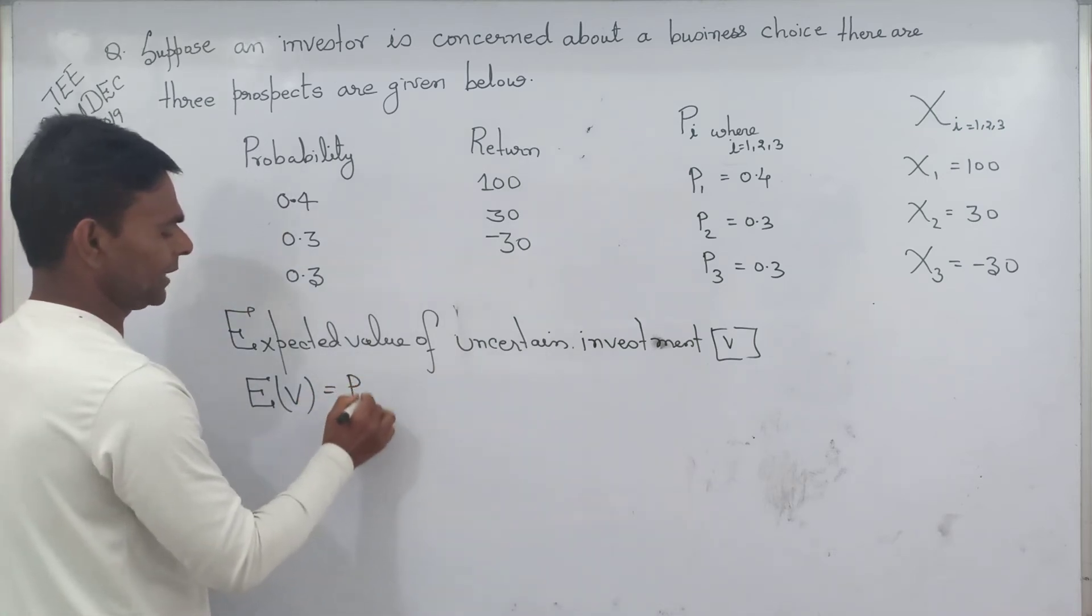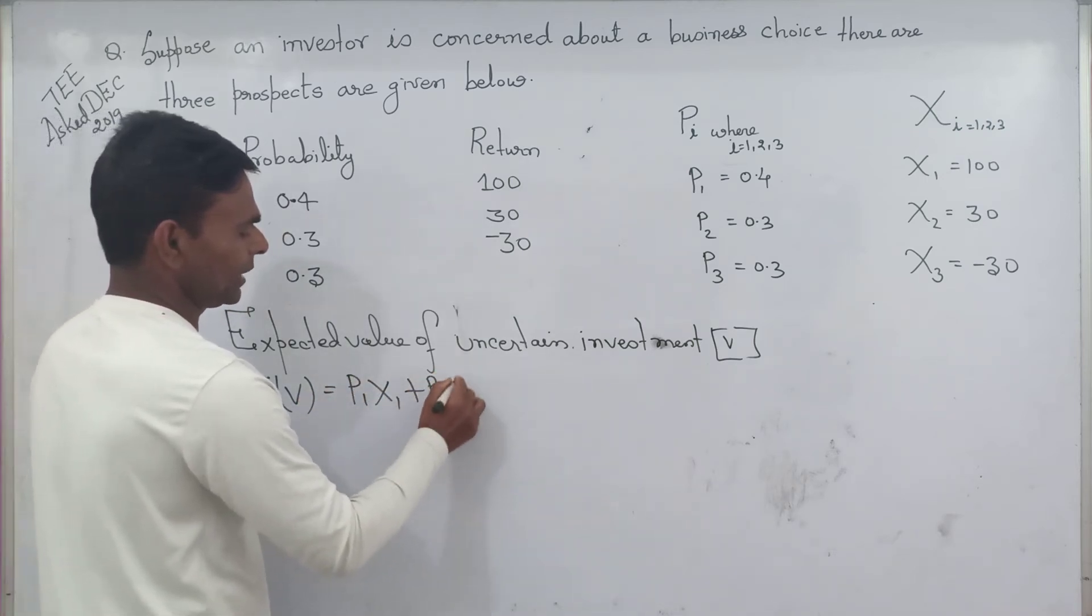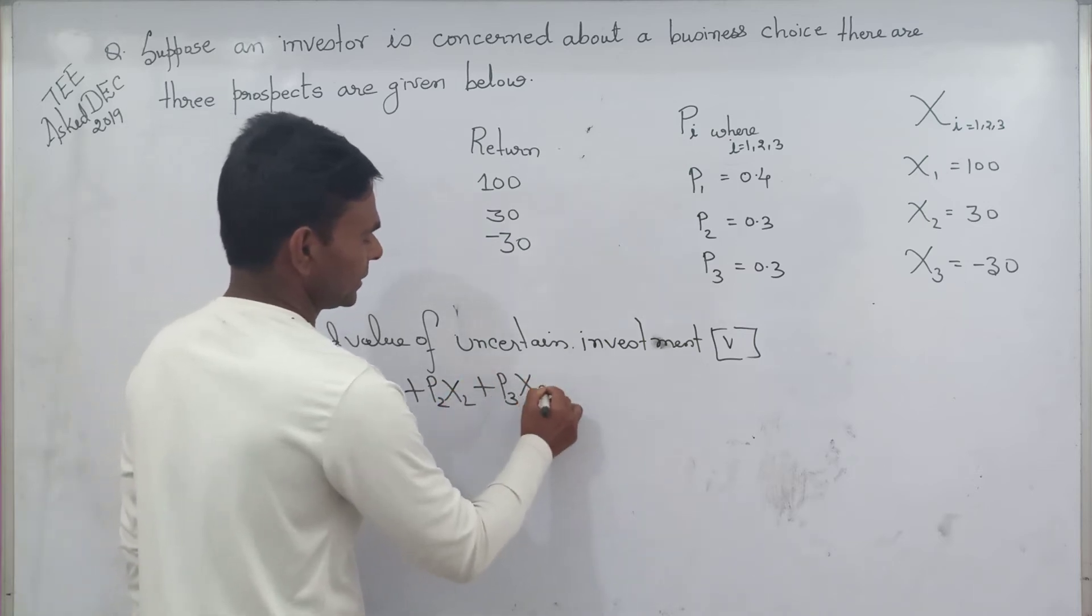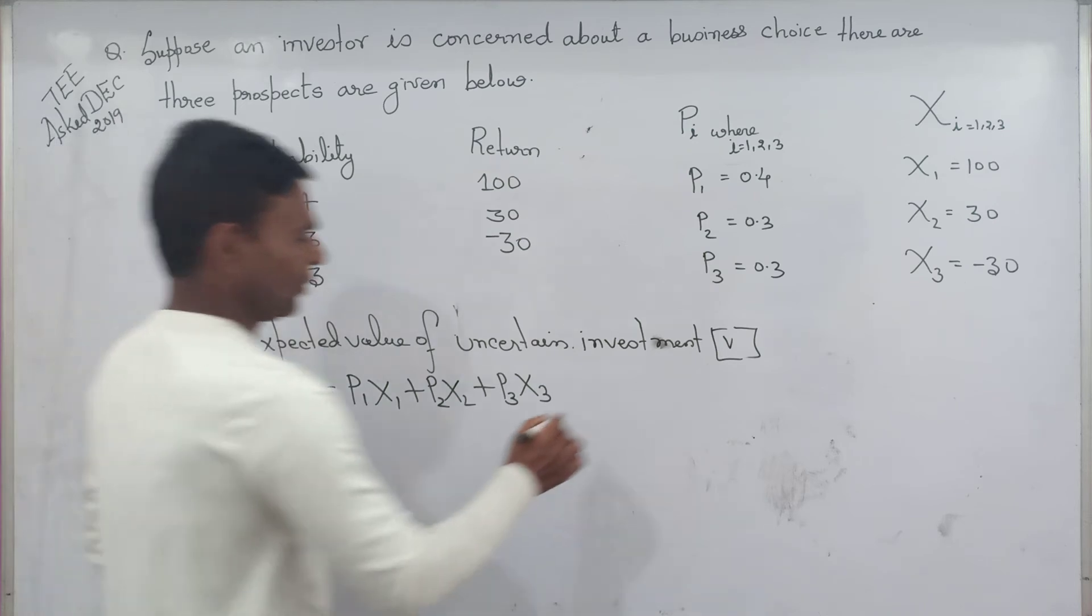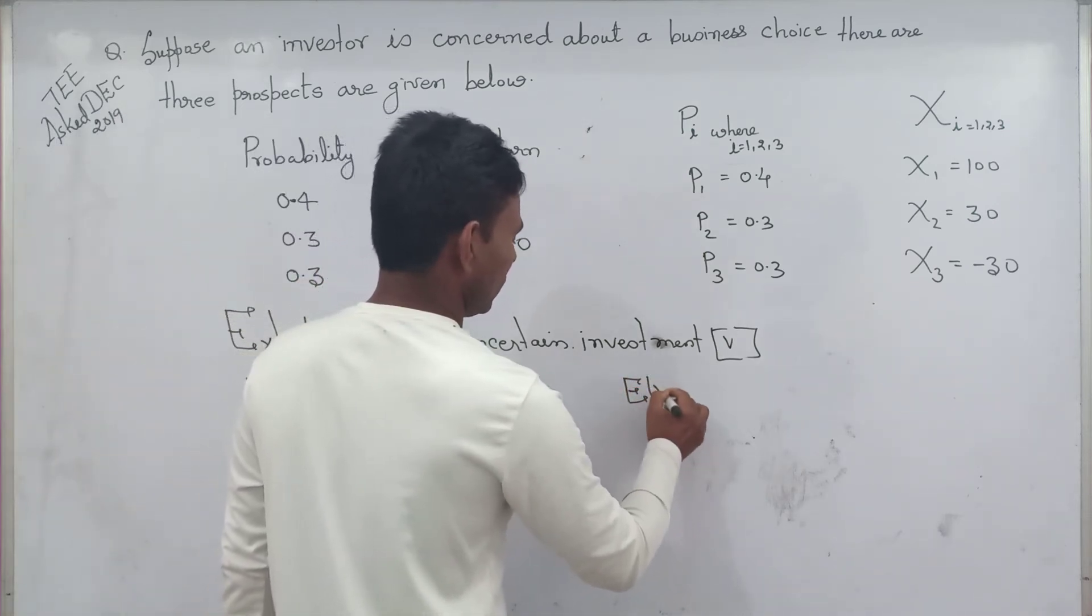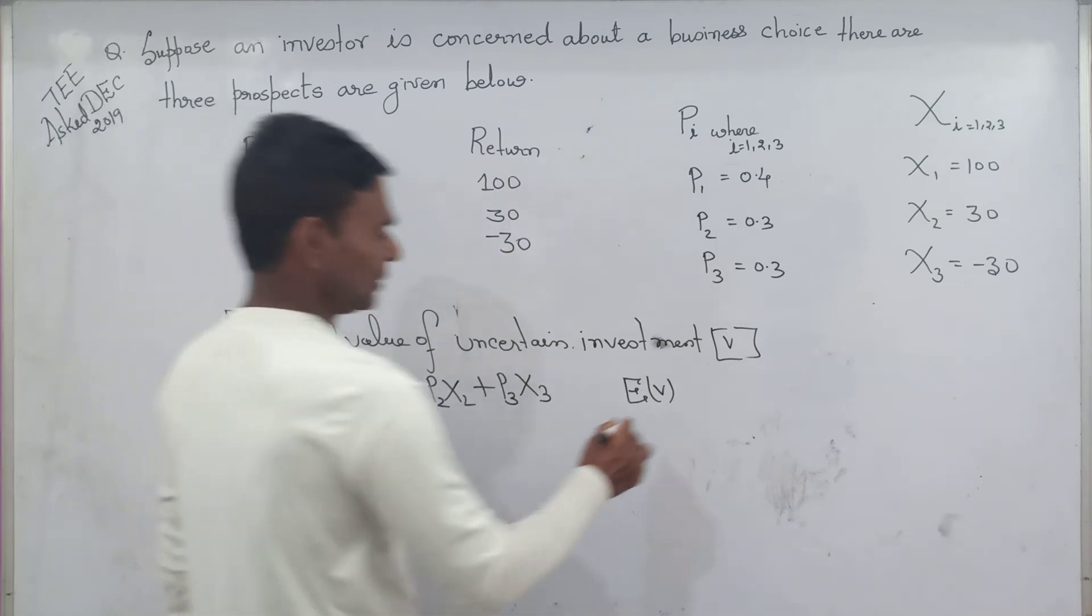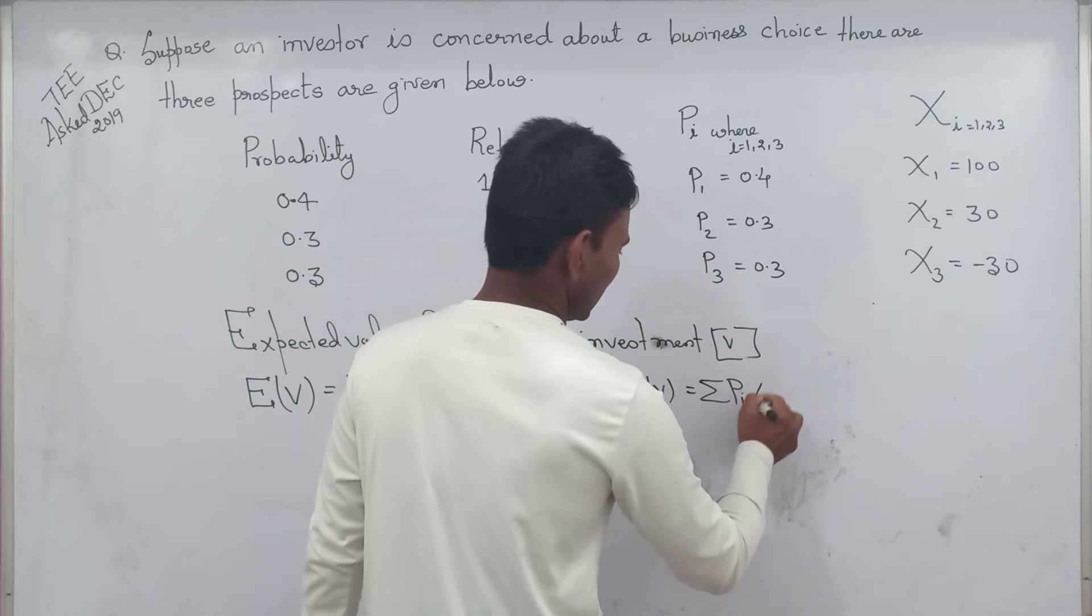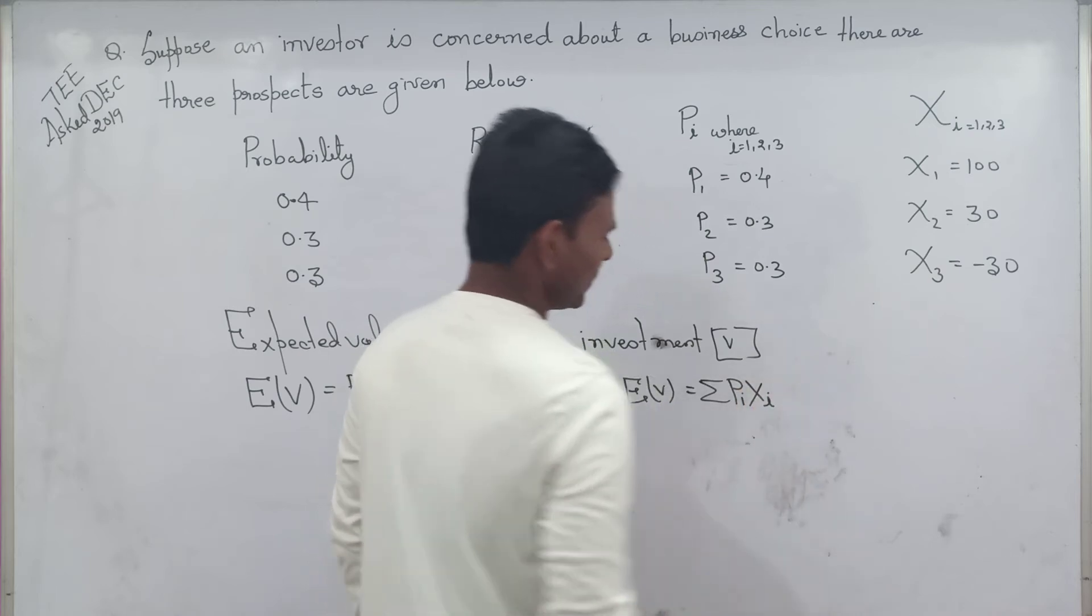The formula: expected value of uncertain return equal to summation of probability times return.